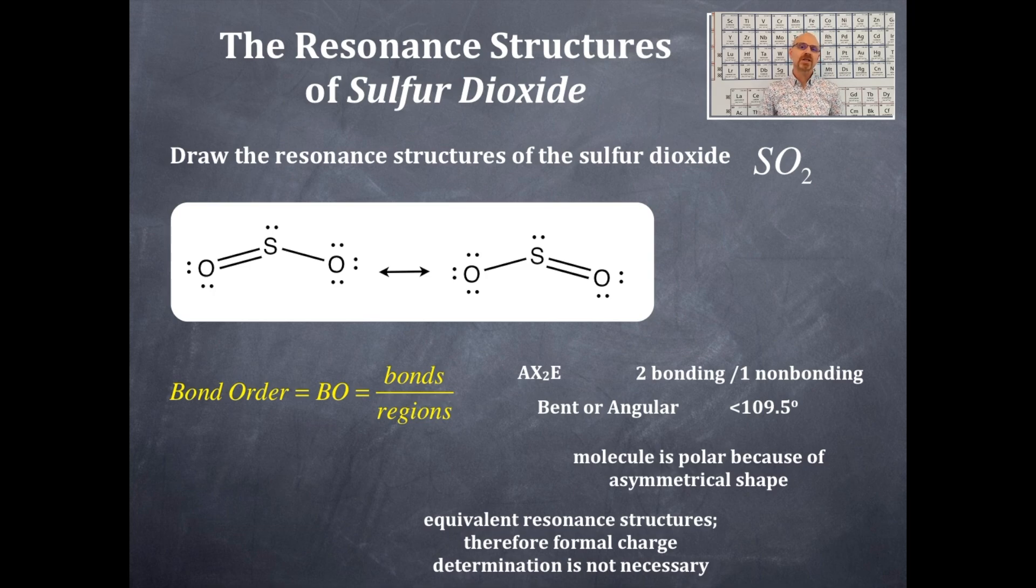And then how many regions around the central element are there? That means how many bonding regions are there? There's one, two bonding regions. So it's going to be three bonds in two regions of bonding regions, and that gives us a bond order of three halves. So this comes up to another point here with resonant structures.